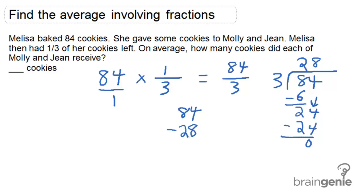If we subtract the 84 that there were to begin with by the 28 that were left after Molly and Jean, we can figure out how many cookies Molly and Jean had. And this ends up being 56. So this is the number of cookies that Molly and Jean had.